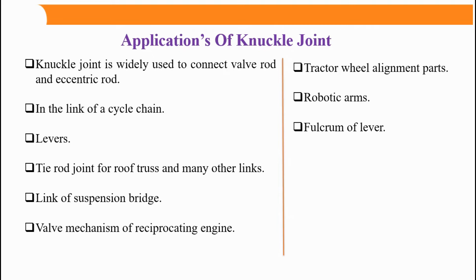To summarize the applications: knuckle joint is used to connect valve rods and eccentric rods, in cycle chain links, levers, tie rod joints of roof trusses, links of suspension bridges, valve mechanisms of reciprocating engines, tractor wheel alignment parts, robotic arms, and the fulcrum of levers.